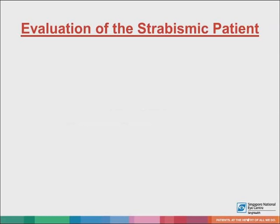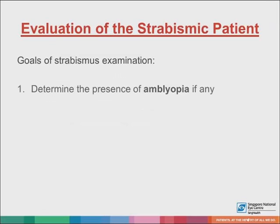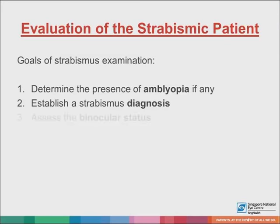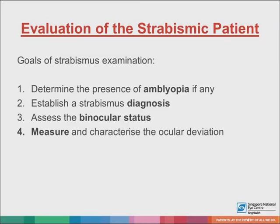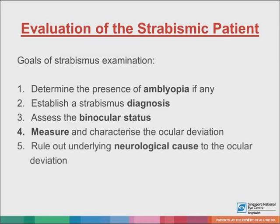In the evaluation of the strabismic patient, the goals of examination would be: firstly, to identify the presence of amblyopia. A strabismus with a strong fixation preference of one eye has a higher risk of developing amblyopia, as opposed to one that freely alternates. Secondly, to establish a diagnosis. Thirdly, assess the binocular status of the child — their fusion potential, if there's diplopia, if the child is suppressing, and if there's any stereopsis. Fourthly, to measure and characterize the ocular deviation. Fifth, but most importantly, to rule out any underlying neurological cause.